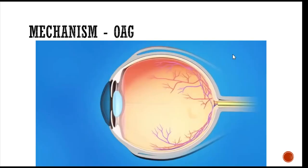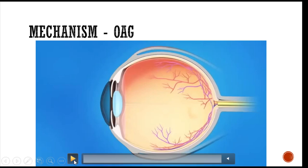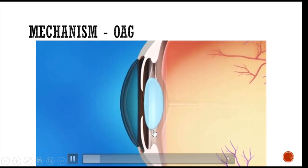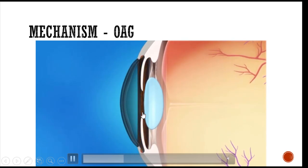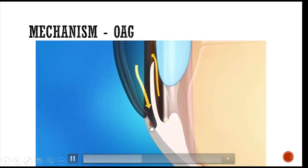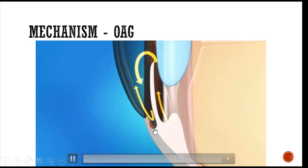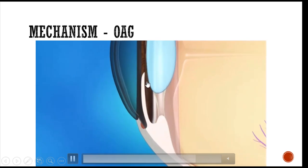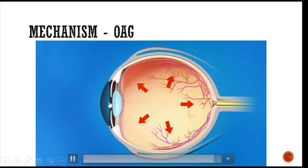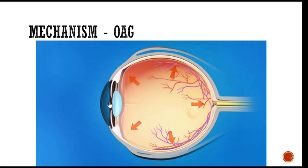To understand the different types of glaucoma, we need to know the mechanism of how glaucoma develops. The aqueous humor is produced by the ciliary body, goes to the posterior chamber, through the pupil to the anterior chamber, and exits through a sleeve-like opening called the trabecular meshwork. In open angle glaucoma, there is a block in this sleeve, so aqueous humor cannot exit, raising pressure inside the eye, which is transmitted to the optic nerve head causing damage.